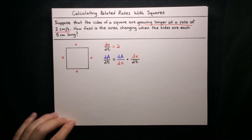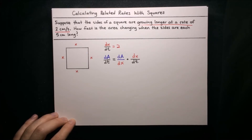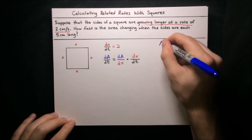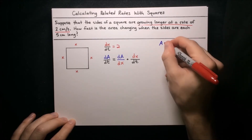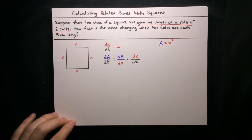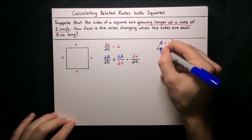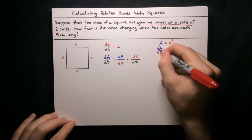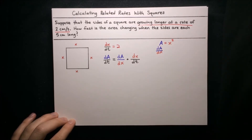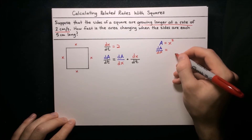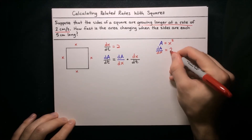Now it just remains to figure out what dA/dx is. Can we construct an equation relating A and x? If so, we can just differentiate it and get dA/dx. A is the area of the square, x is the length of a side of the square, and there's an easy equation for that: the area of a square is just equal to the side length squared. So if we differentiate this equation, dA/dx equals the derivative of x squared, which using the power rule is just 2x.